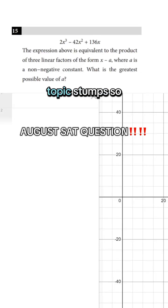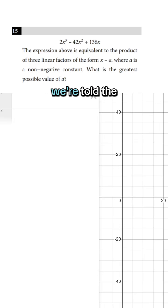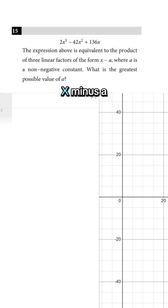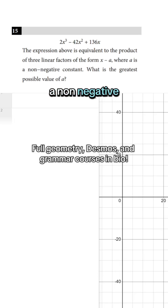This extremely common SAT topic stumps so many people. We're told the expression above is equivalent to the product of three linear factors of the form x minus a, where a is a non-negative number. What is the greatest possible value of a?